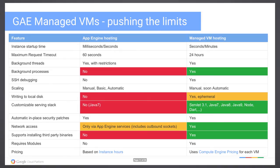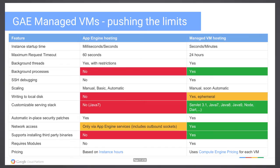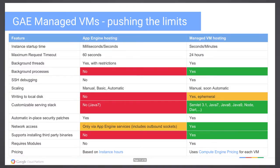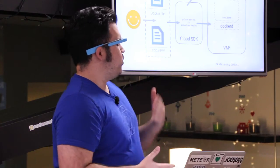On the App Engine side you have a very limited world view of what you can ship, but on the managed VM side you get significantly more power. Custom runtimes are also in beta — you simply change your app.yaml and define a Dockerfile which loads a particular image. The Dockerfile defines your base, and app.yaml defines your running environment. You can also respond to health and lifecycle checks. The workflow is: your app, a Dockerfile, run gcloud app run or gcloud app deploy, and you've deployed and pulled from the registry into your container.